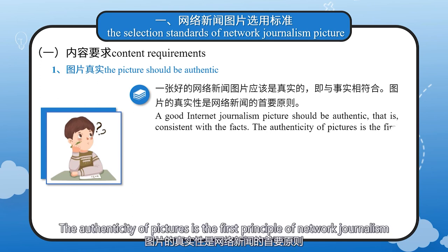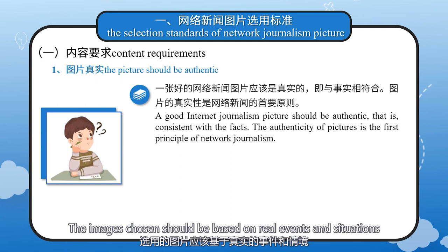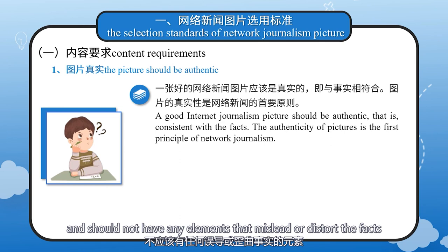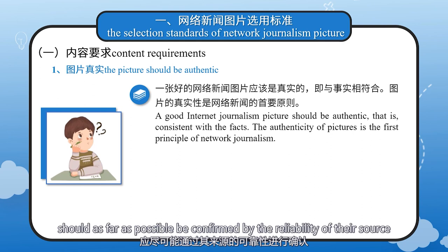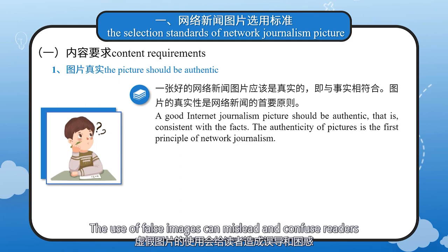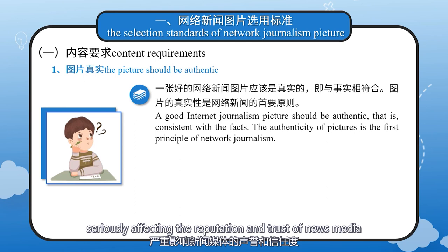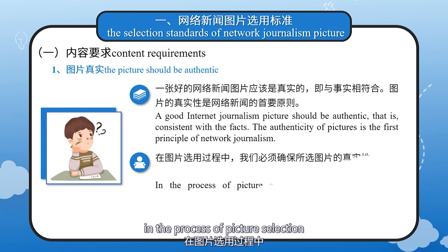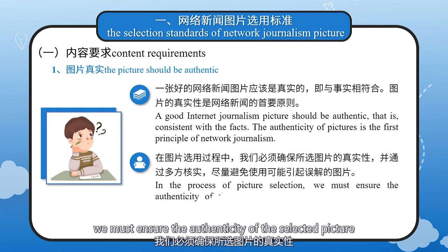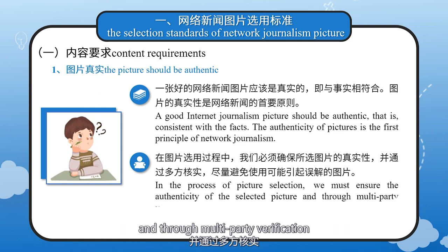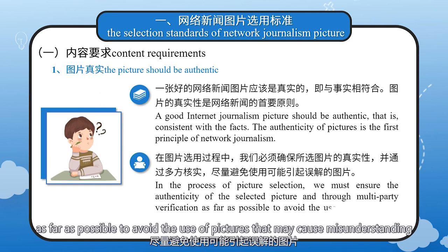The authenticity of pictures is the first principle of network journalism. The images chosen should be based on real events and situations and should not have any elements that mislead or distort the facts. Pictures in doubt should, as far as possible, be confirmed by the reliability of their source. The use of false images can mislead and confuse readers, seriously affecting the reputation and trust of news media. Therefore, in the process of picture selection, we must ensure the authenticity of the selected picture and, through multi-party verification, avoid the use of pictures that may cause misunderstanding.